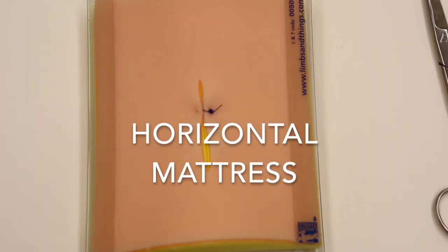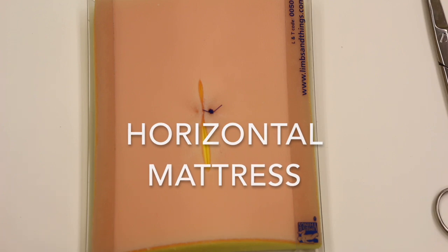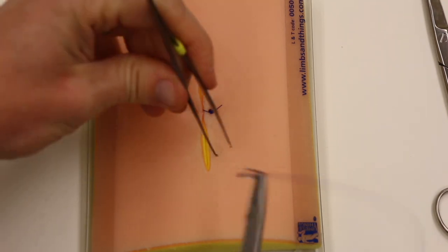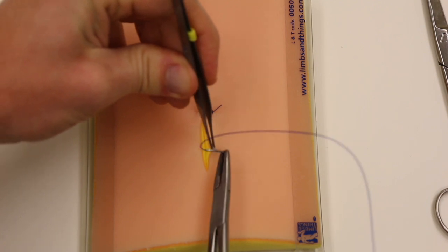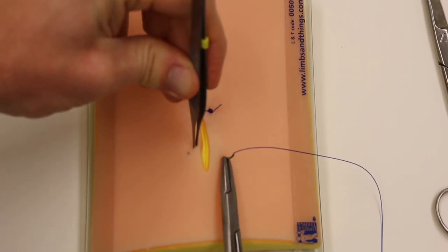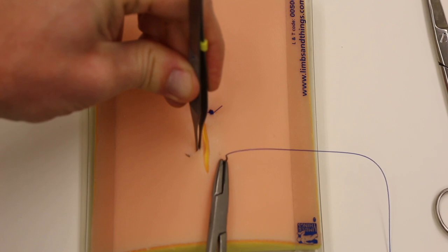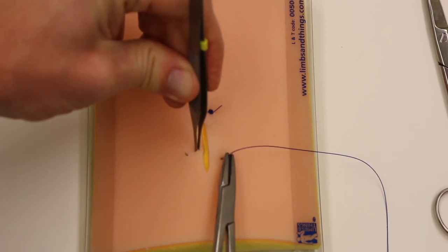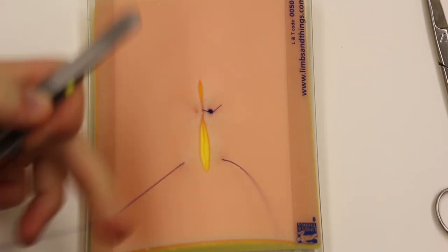And now we'll show the horizontal mattress. So for that, we're going to go a reasonable distance back from the skin edge. Coming out the other side here at about the same distance. So roughly equal. Pulling through.